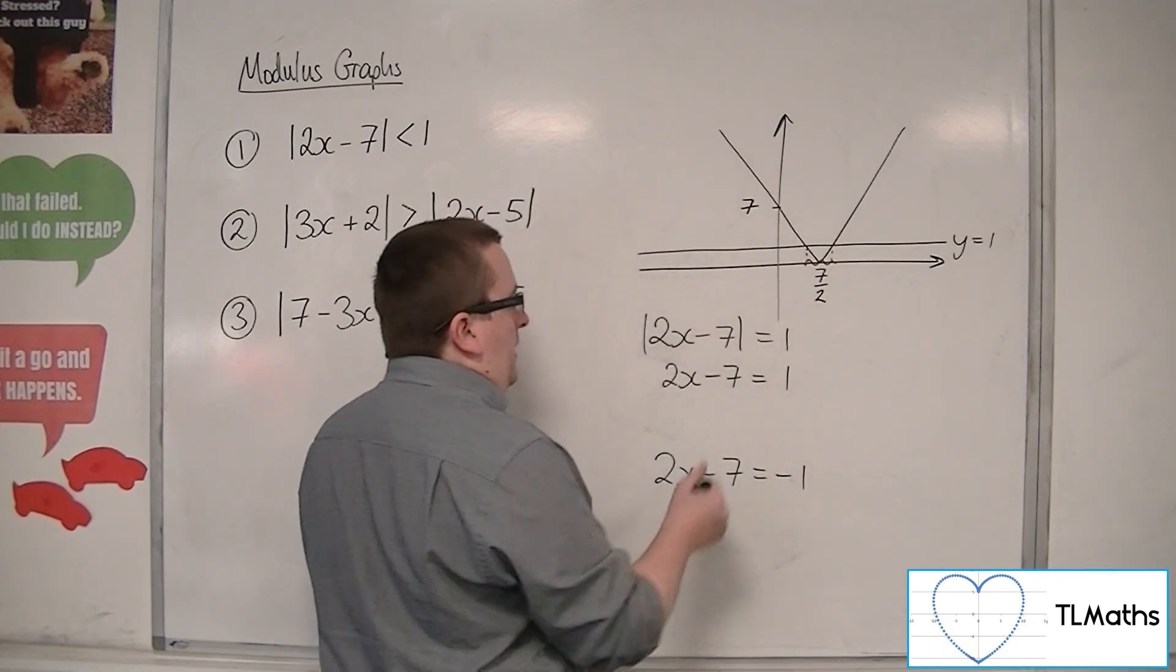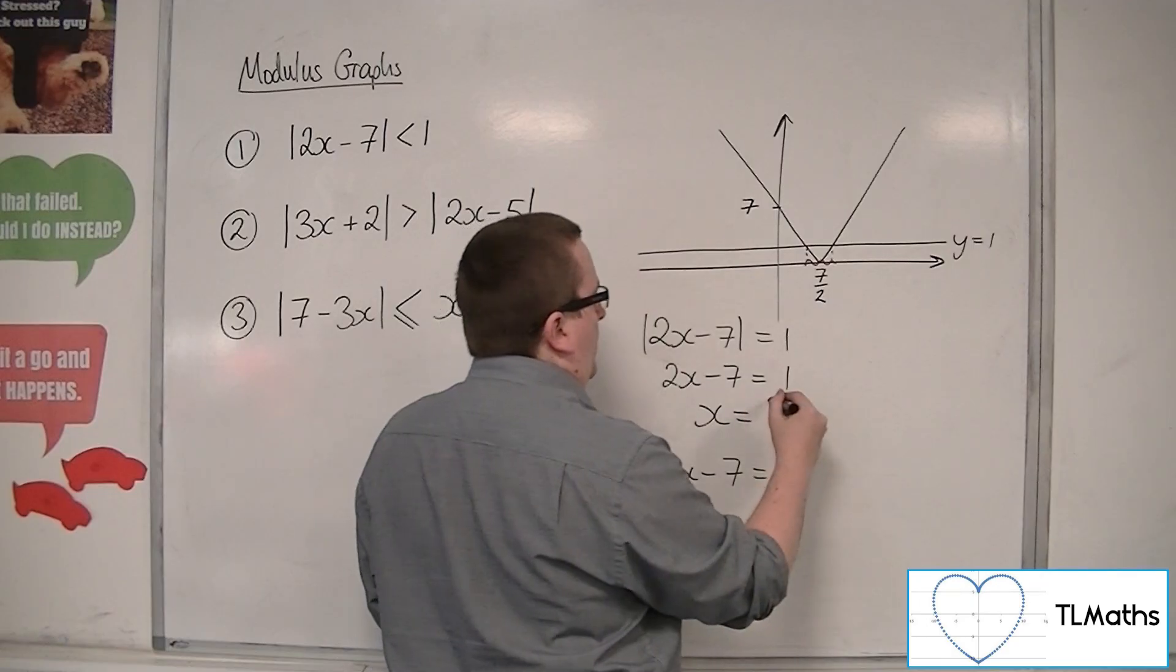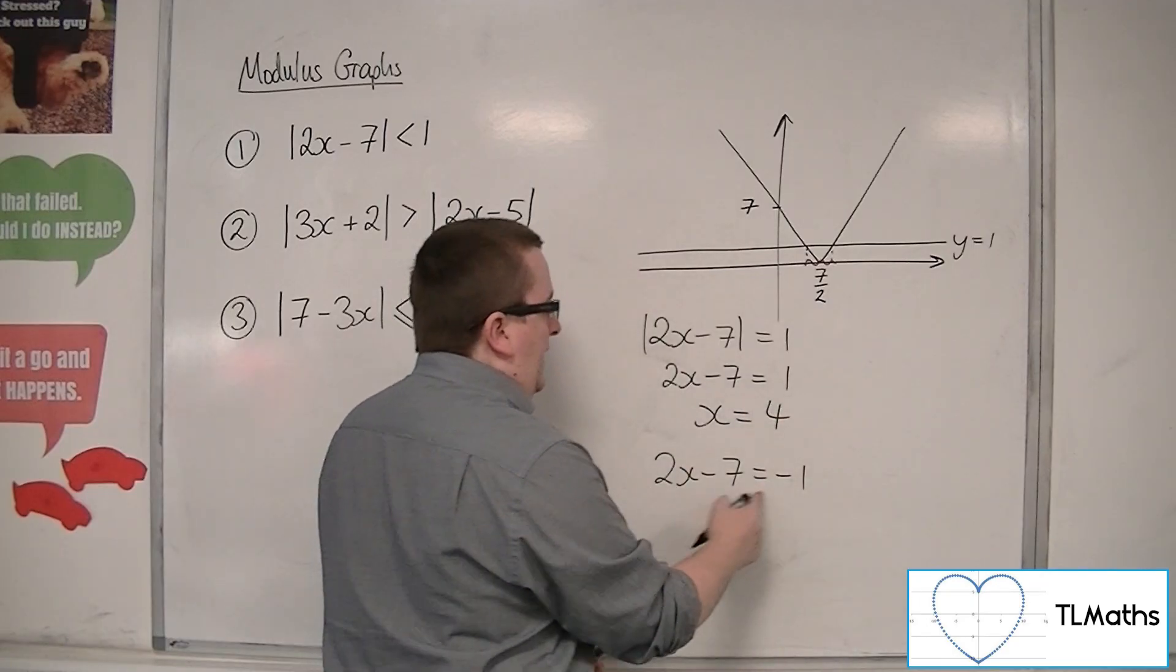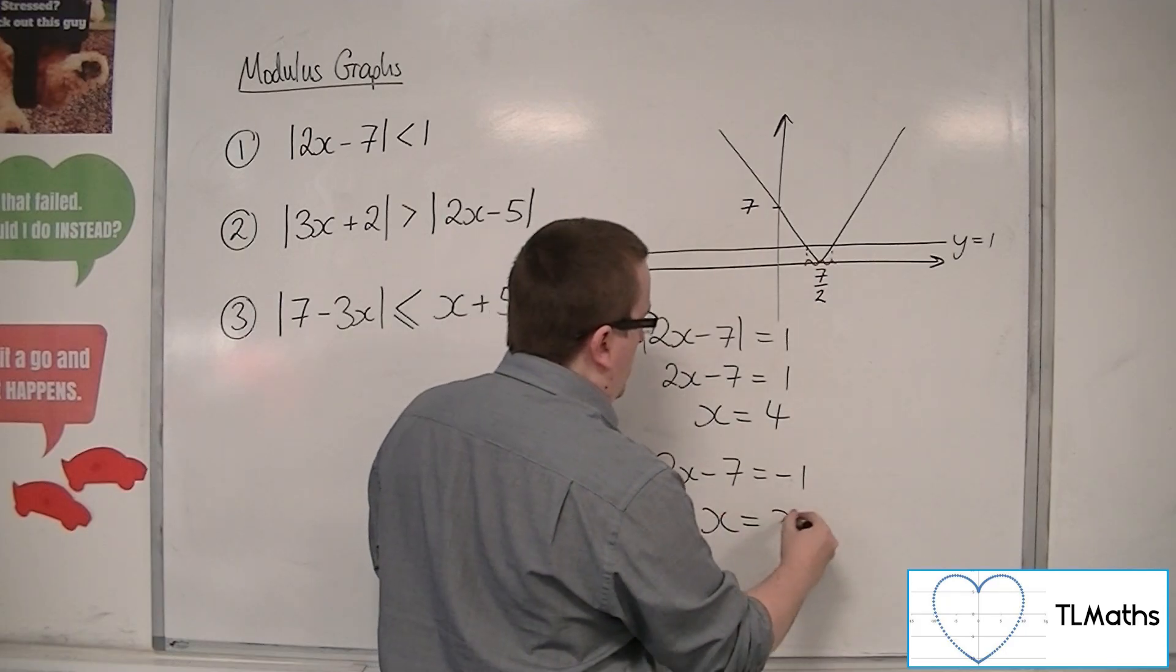In which case, in this case, we've got adding 7, I get 8, so x would have had to have been 4. Adding 7 in this case, I would get 6, so x would have to have been 3.